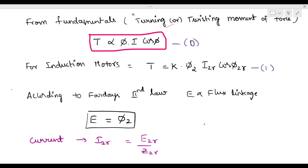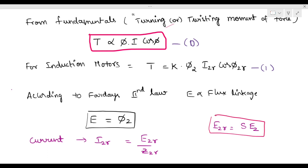i₂r equals E₂r divided by Z₂r. Now for E₂r: the rotor EMF at slip s is given by E₂r equals s·E₂. So E₂r equals s into E₂.